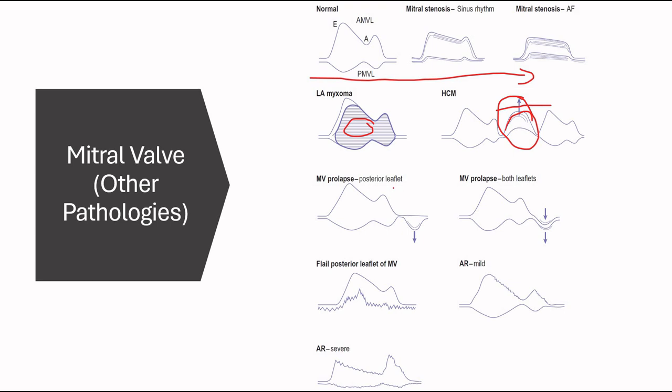In mitral valve prolapse, the posterior leaflet looks like this. And if both leaflets, they look like this. And these are in systole. Posterior flail leaflet of mitral valve appears to be like that. It flails into the opening of the mitral valves.